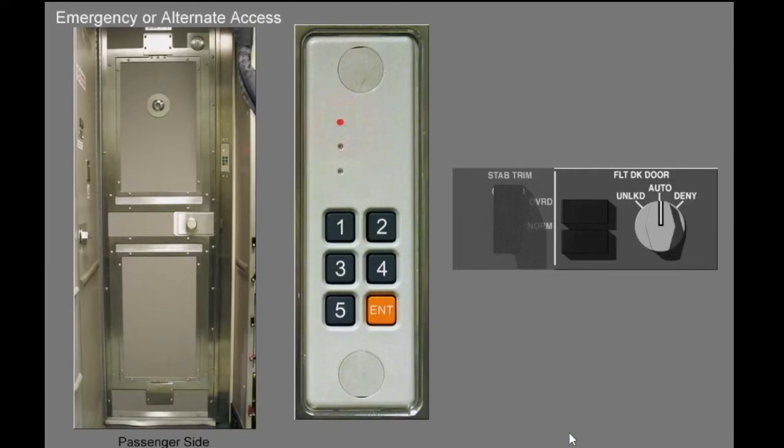Entering a code begins a timed sequence of events to unlock the door. The first aural alert sounds. The red door lock indicator light extinguishes. The amber light illuminates indicating you entered the correct code, and the amber auto unlock indicator light illuminates on the flight deck.